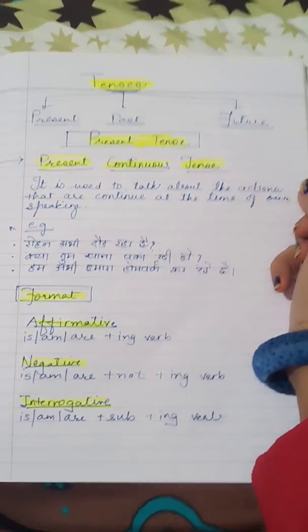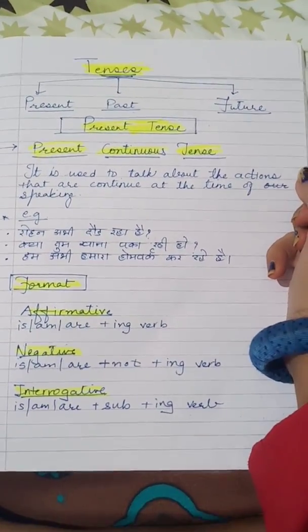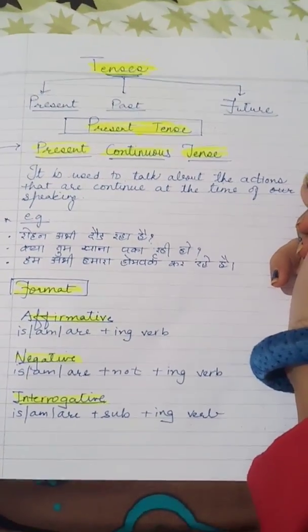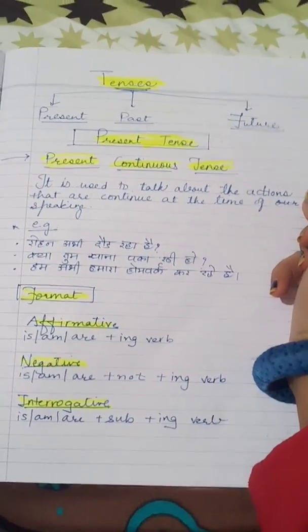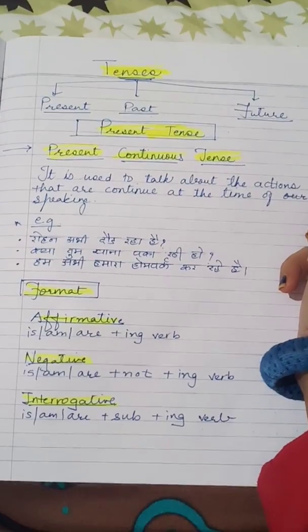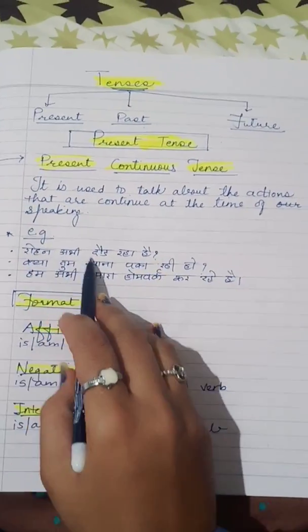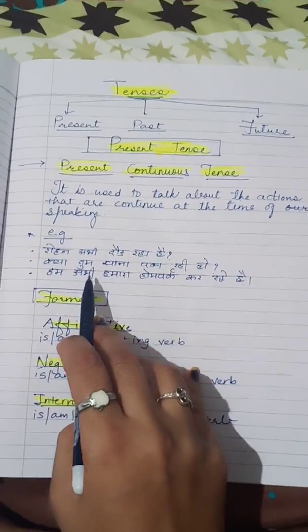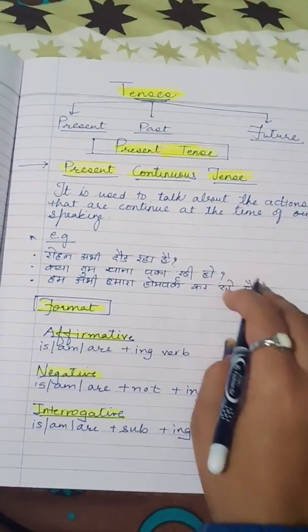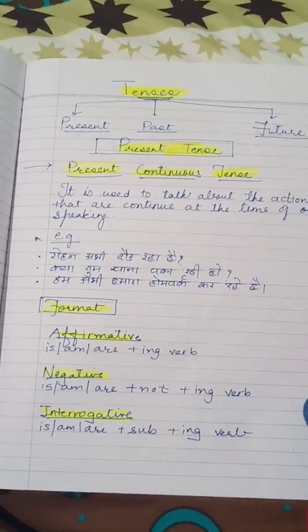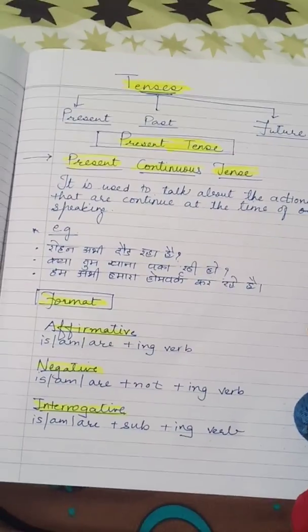So when do we use present continuous tense? It is used for the actions which are continuing right now. For example: Rohan is now dancing. Are you getting food? We are now holding our homework. If you have noticed all these actions, the action is continuing — this is why the present continuous tense will be used.